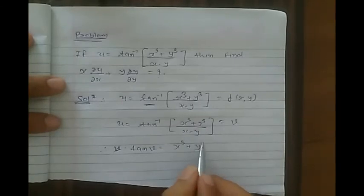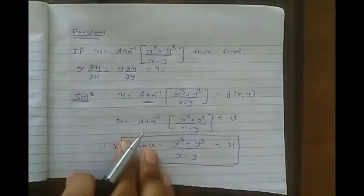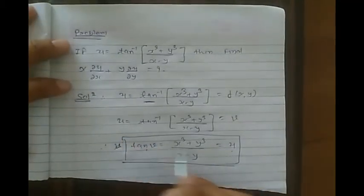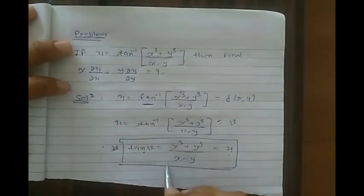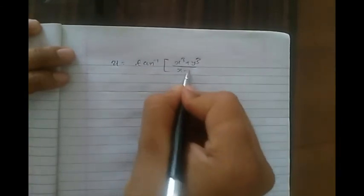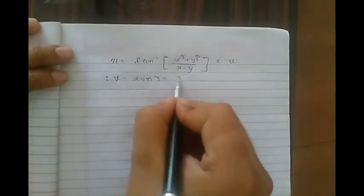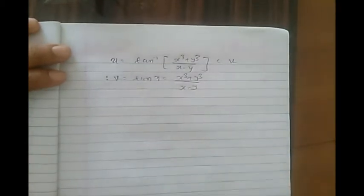We set tan(v) = (x³ + y³)/(x − y), which equals u. From Modified Euler's Theorem, u is a function of v, and v is a function of x and y — both independent variables. So v = tan(u) = (x³ + y³)/(x − y) — this is equation (1).